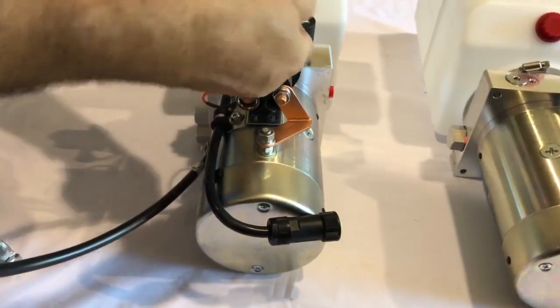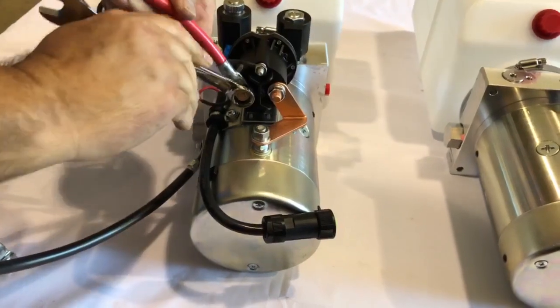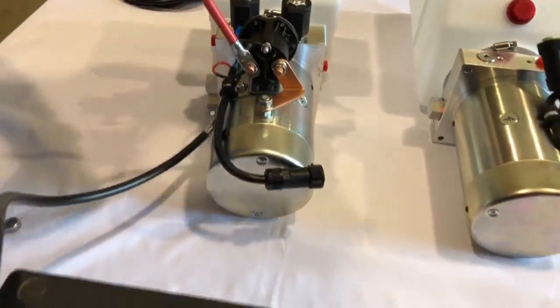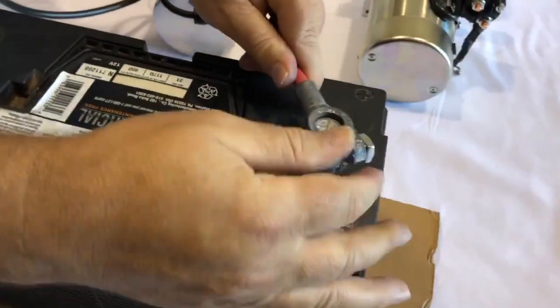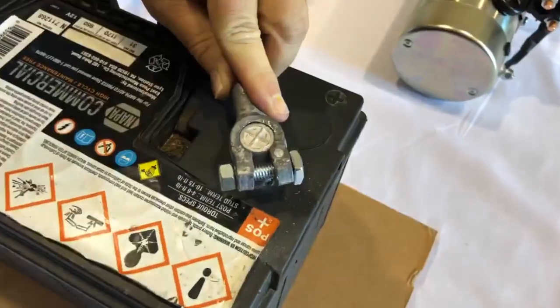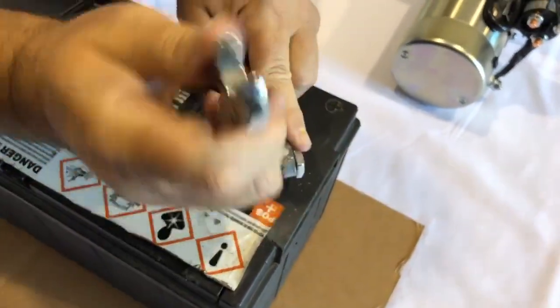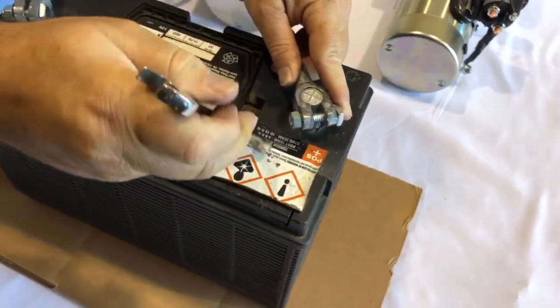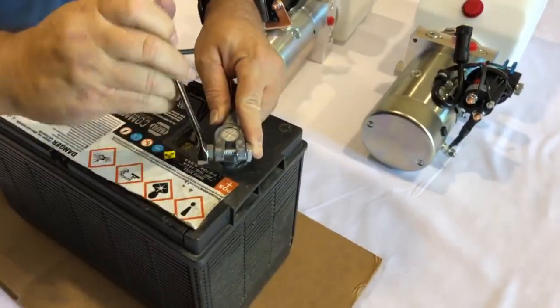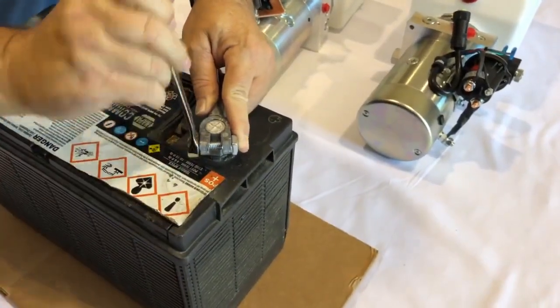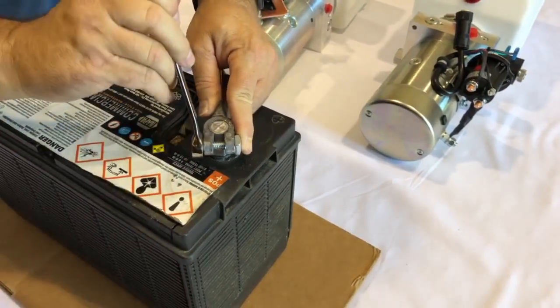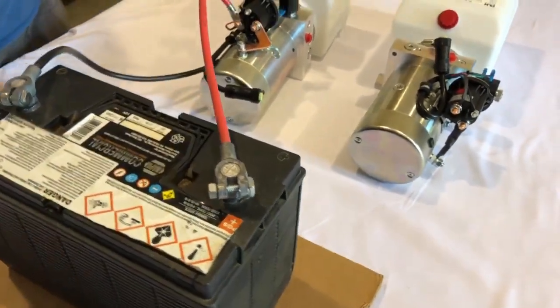Just be sure not to over tighten the nut because it can possibly break that lug, it's just made out of copper. And then of course go ahead and connect your positive side of the battery.